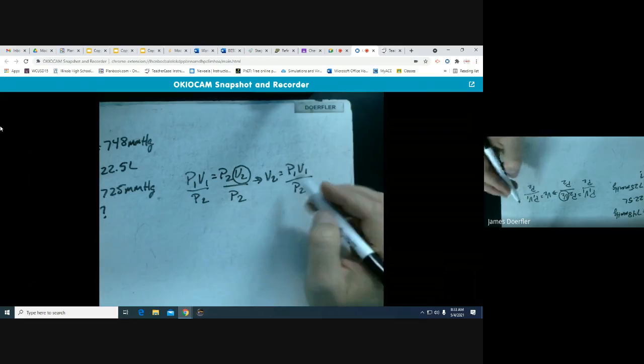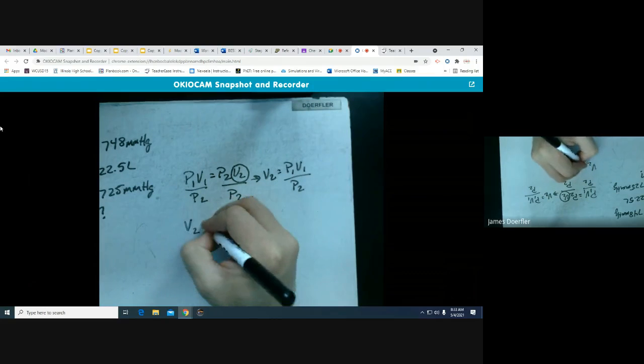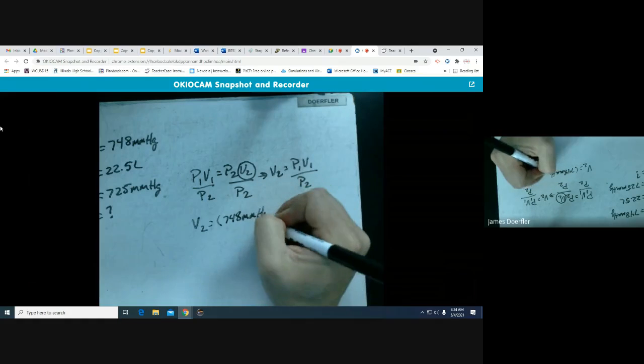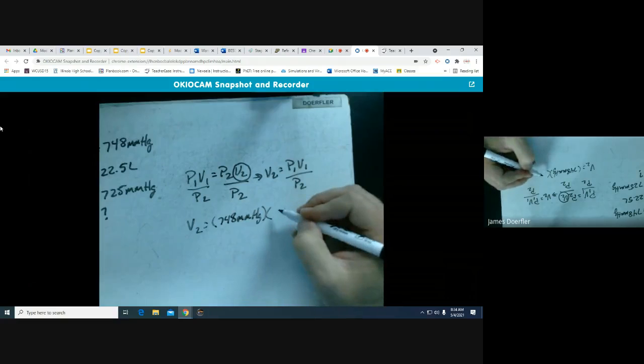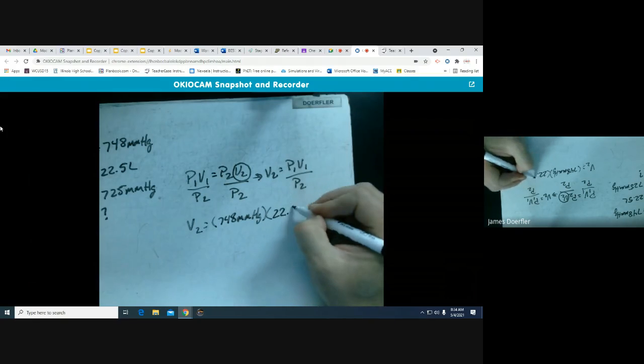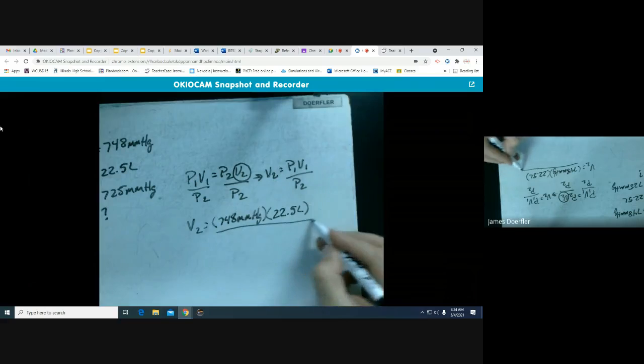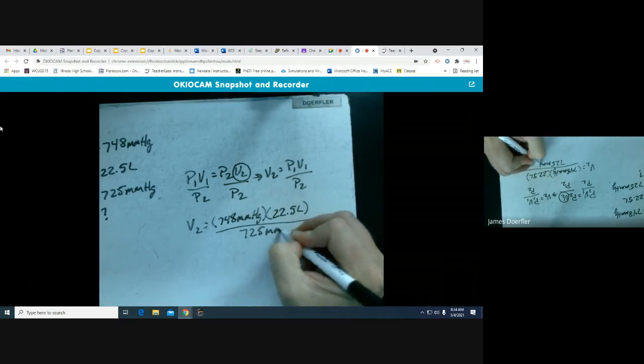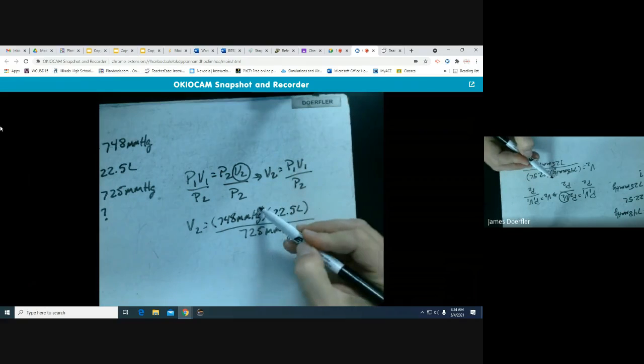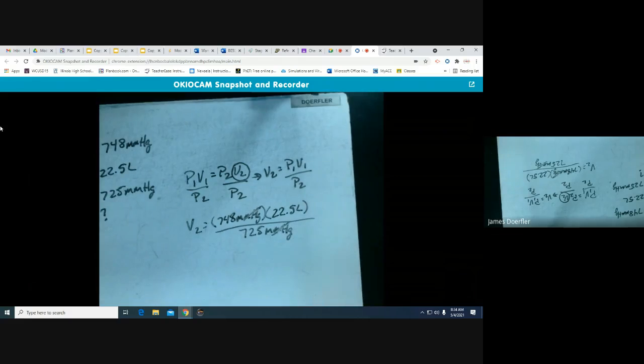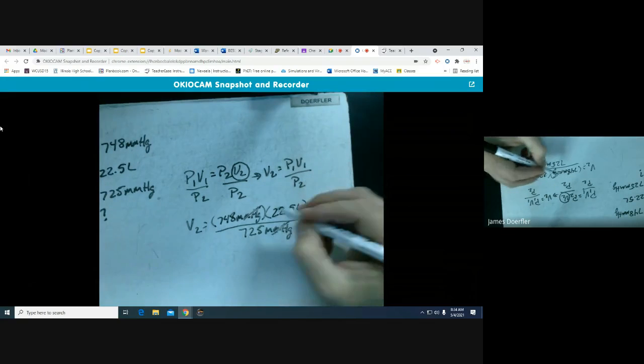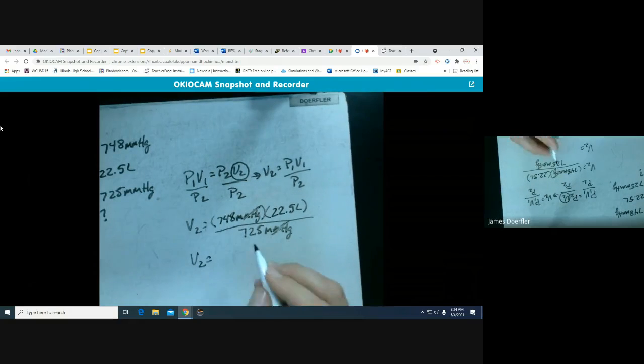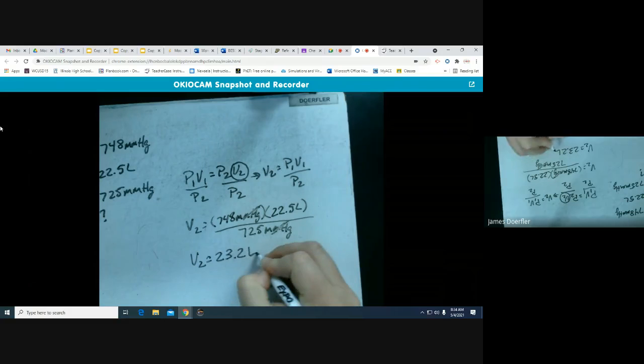I've got it arranged how I need to. My P1 was 748 millimeters of mercury. Our V1 was 22.5 liters. Our P2 was 725 millimeters of mercury. This allows for our units to cancel out for millimeters of mercury, our liters gets to stay the same. And then you go ahead and calculate it. You should get 23.2 liters.